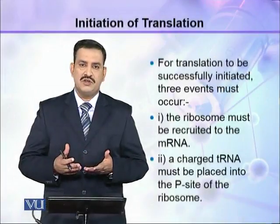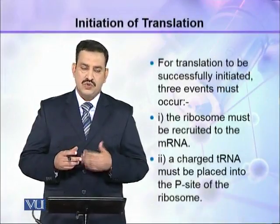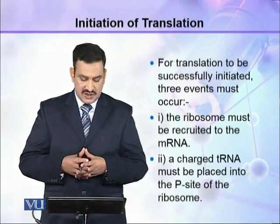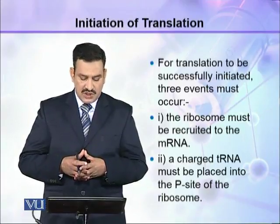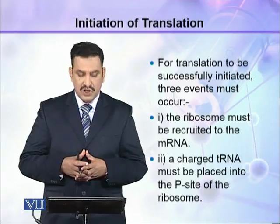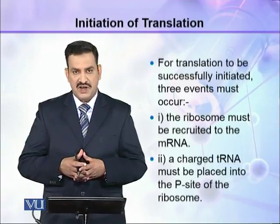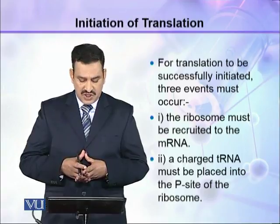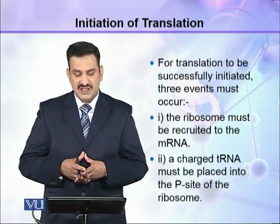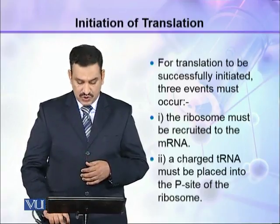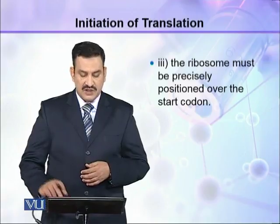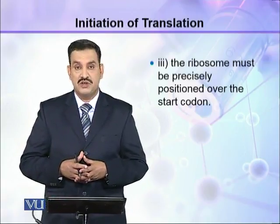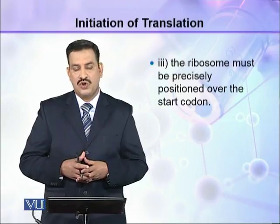For translation to be started successfully, three events must occur. These three events include: the ribosome must be recruited to the mRNA, second a charged tRNA must be placed into the P site of the ribosome, and thirdly the ribosome must be precisely positioned over the start codon.